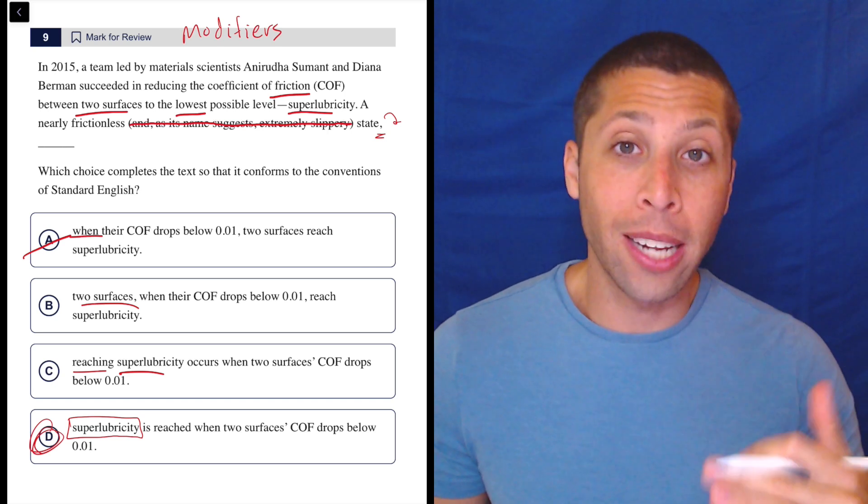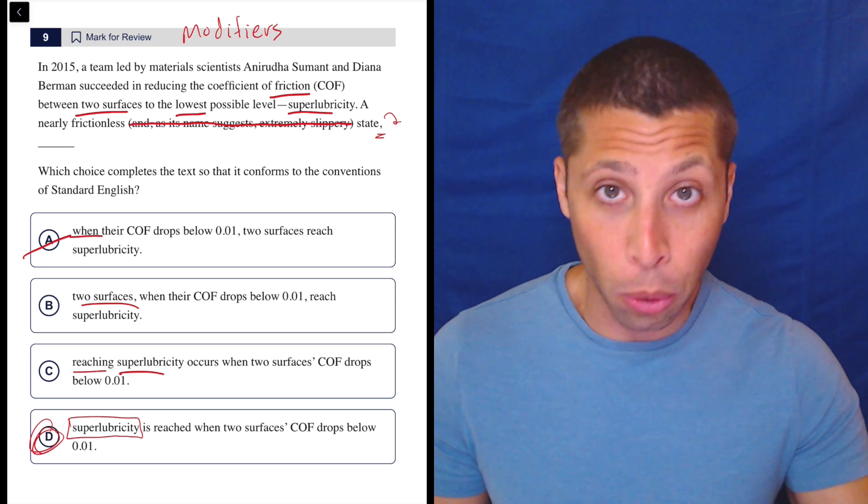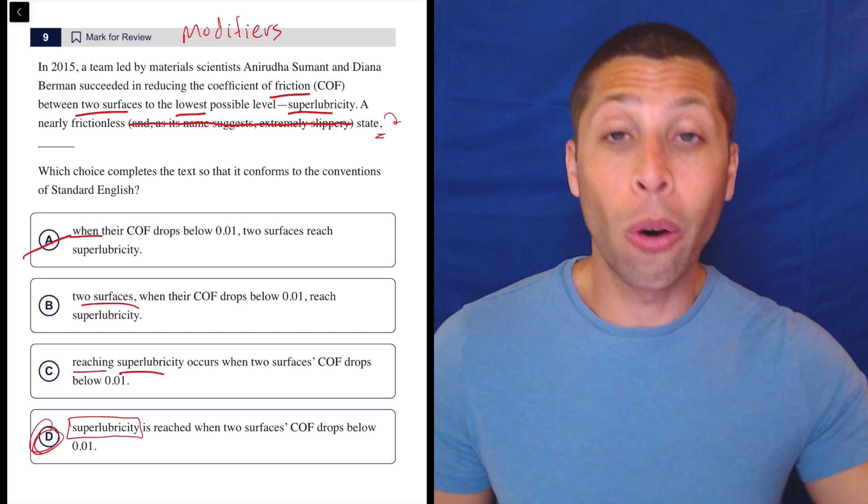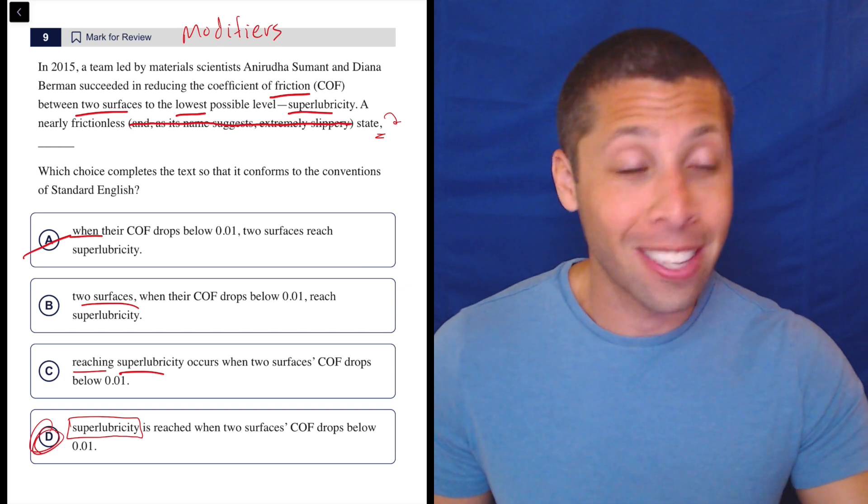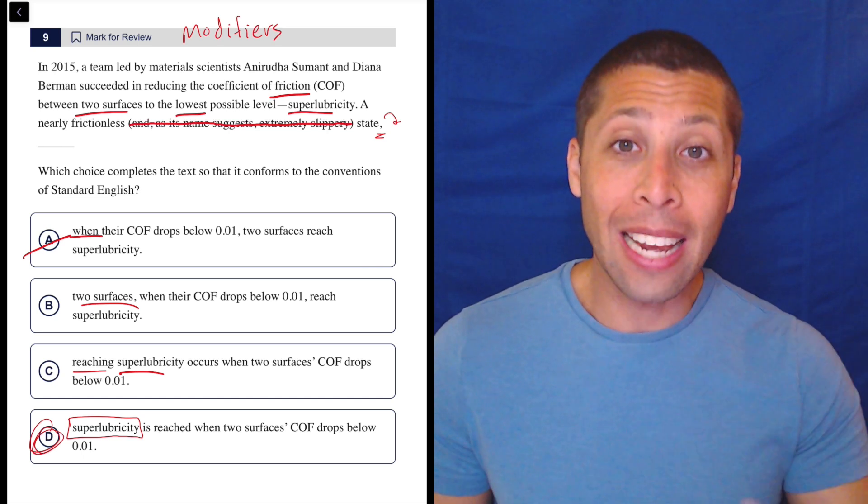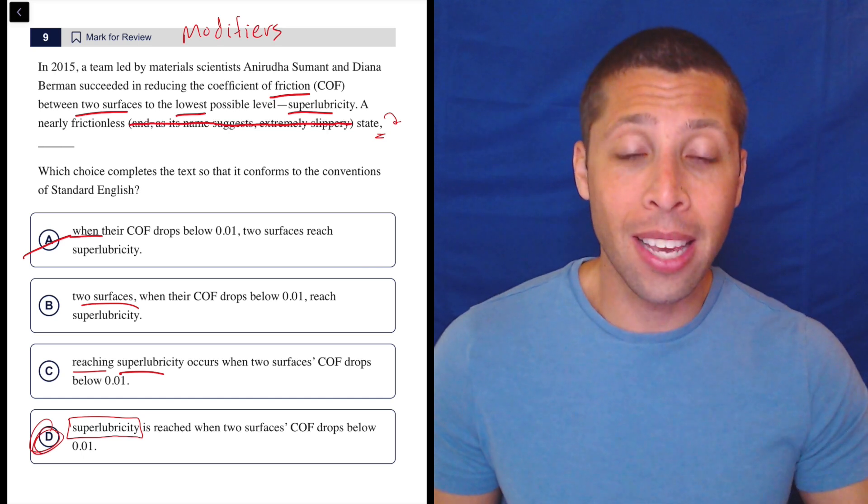But this is a great example of why it's so important to predict the rule before you start solving the question. A lot of you are going to read this paragraph and get totally lost in all this crazy science. None of it matters. This is a grammar question. And so we need to think about what the structure of this sentence is.